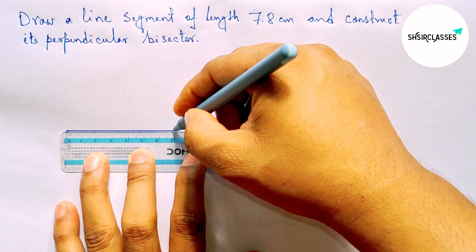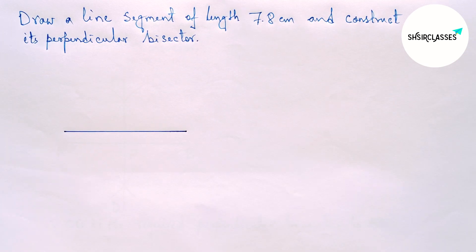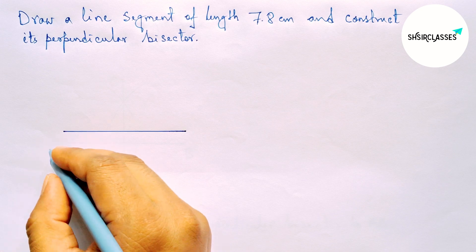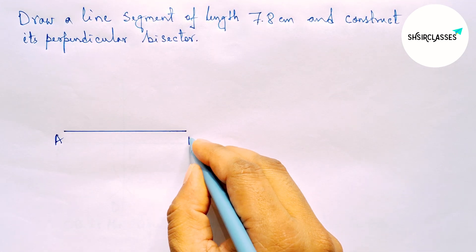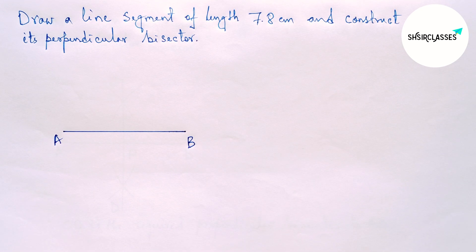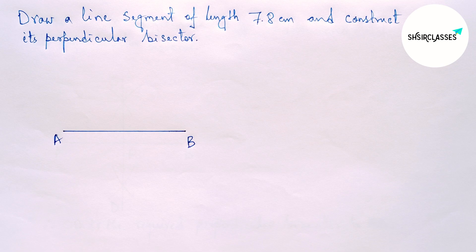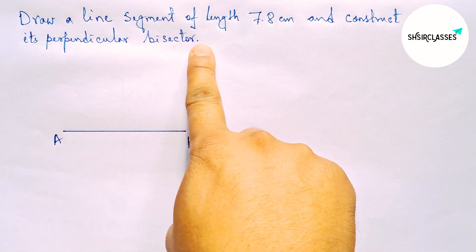So this is a 7.8 centimeter line segment. Next, labeling here A and B. Now construct its perpendicular bisector to the line AB with the help of compass.